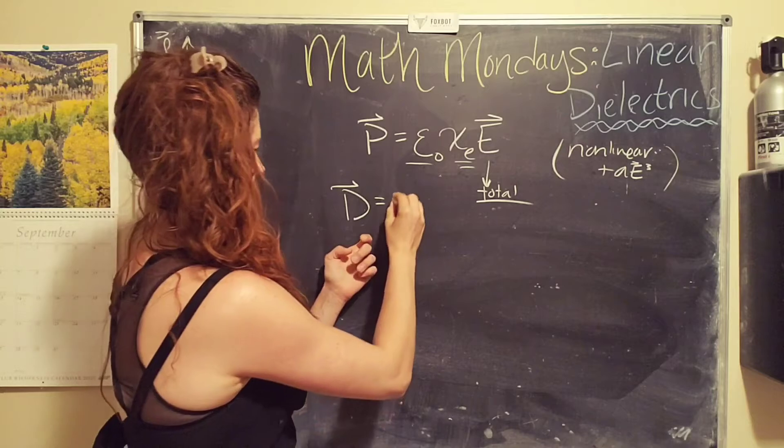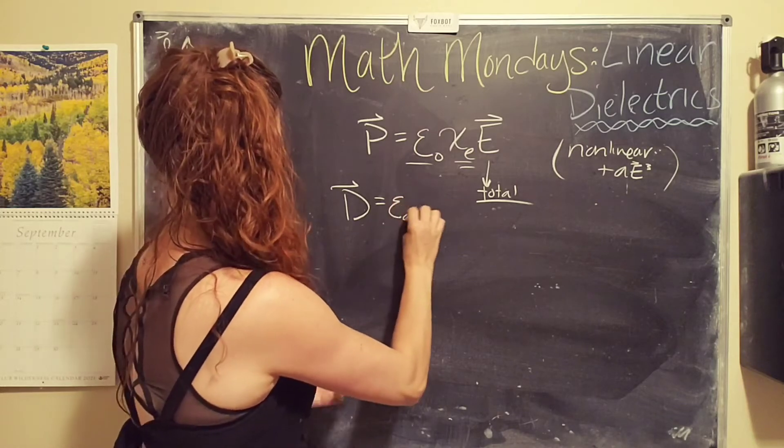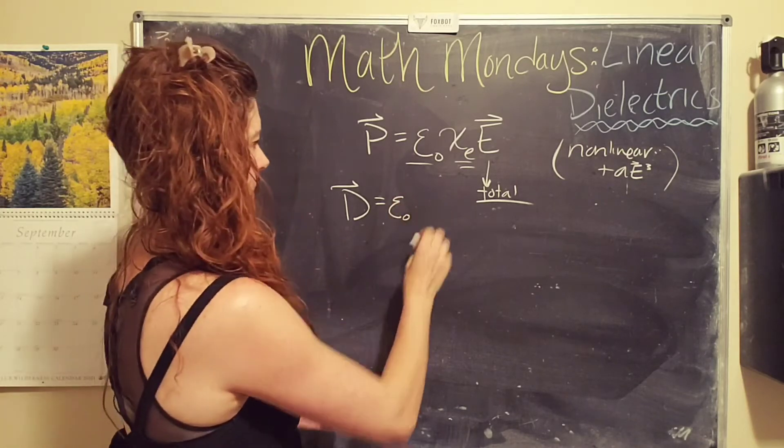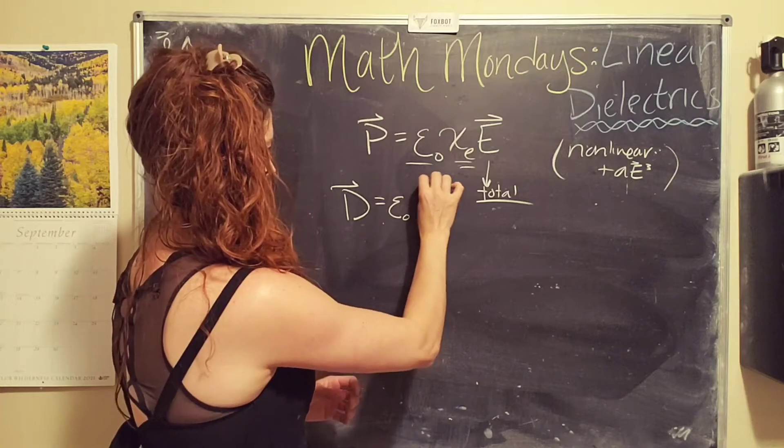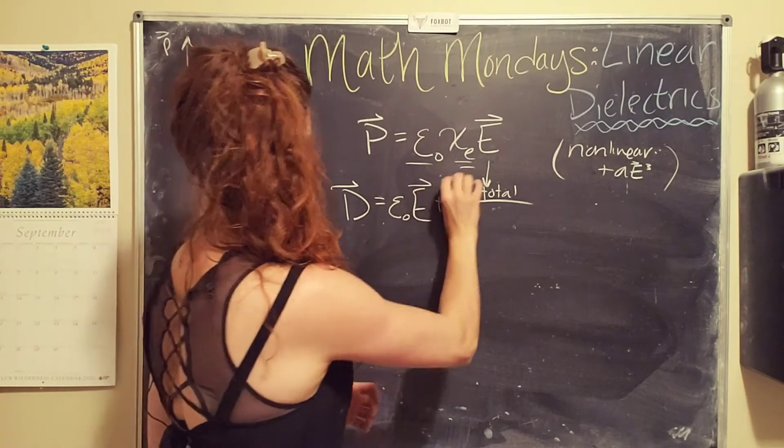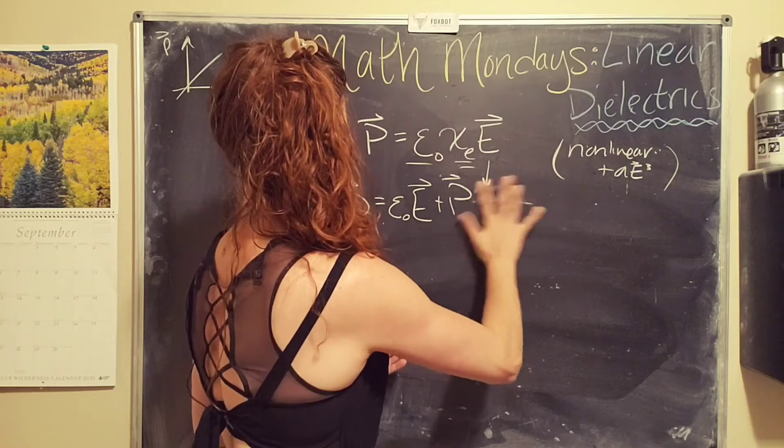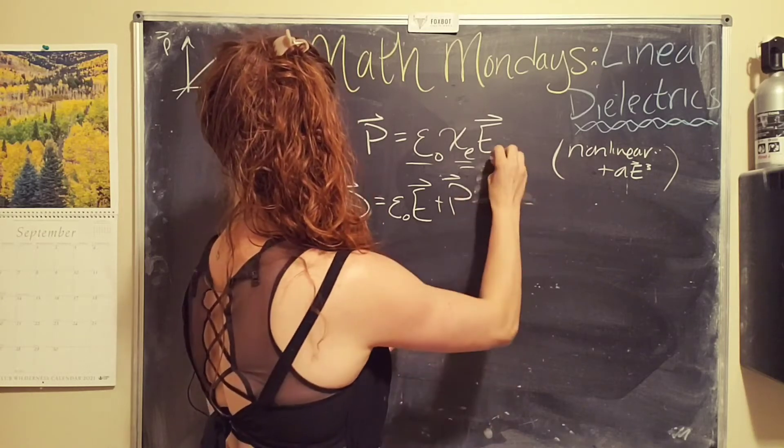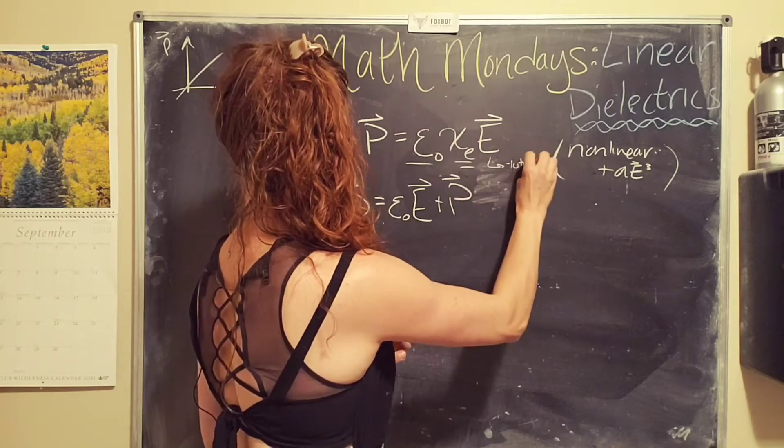Okay. So the displacement is defined or equal to the vacuum permittivity times the electric field plus the polarization. Oh no, I'm running in... We'll just say total over here. Okay.